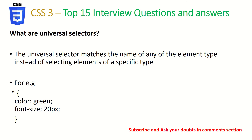What are universal selectors? We learned about CSS selectors — specifying CSS style attributes like class or ID using dot or hash operators. Similarly, a universal selector applies to any element that matches the element name. For example, using star (*) with color green and font size 20 means all elements will be color green with font size 20 pixels. Universal selector matches any element type instead of selecting elements of a specific type.